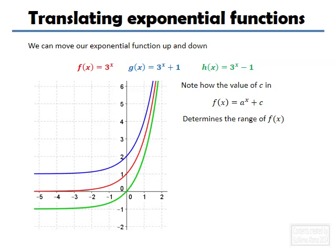In the case of h of x, the green one, the range is going to be y bigger than minus 1. In the case of the red one, 3 to the power of x, where c is 0, the range is going to be y bigger than 0.